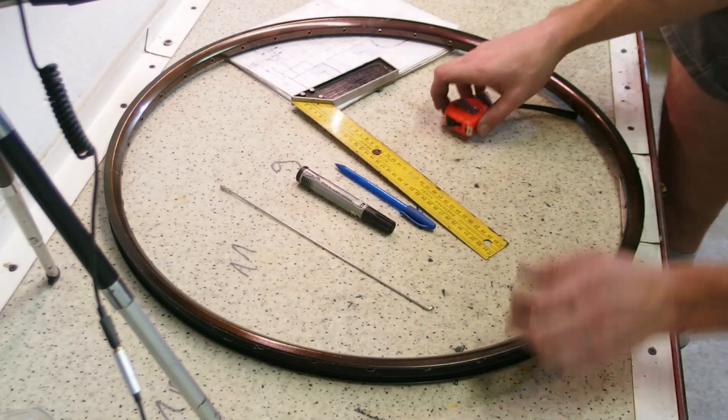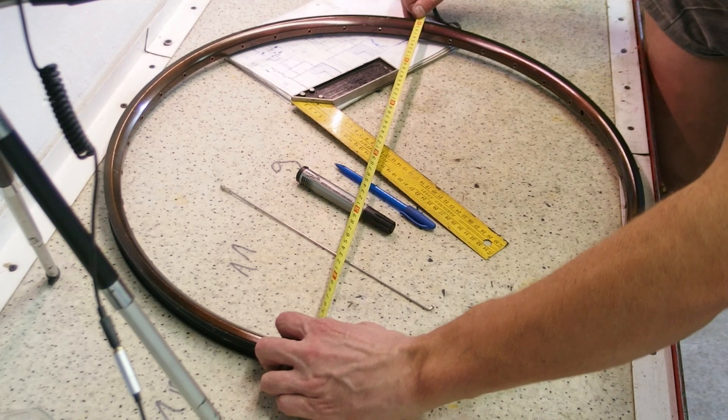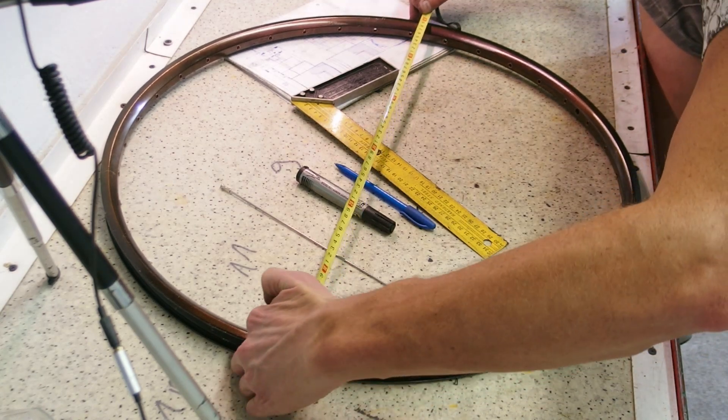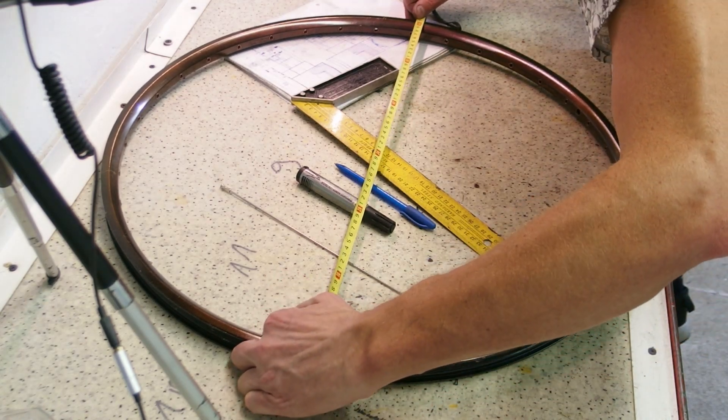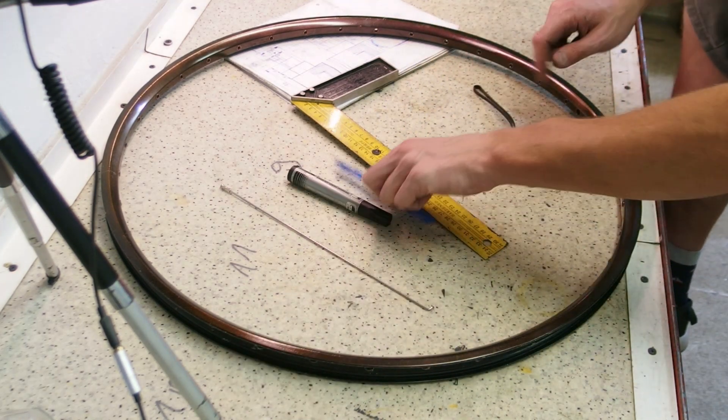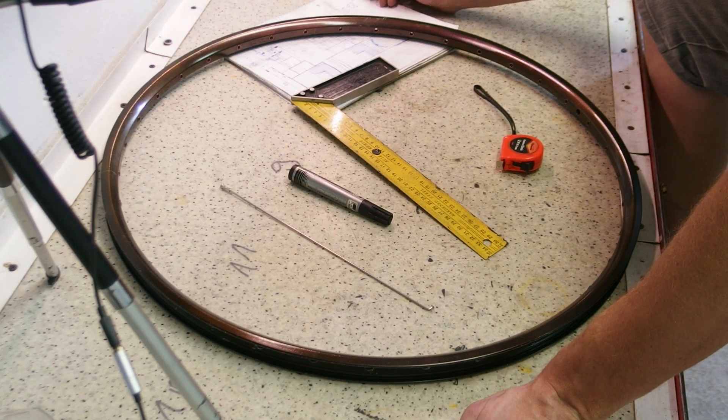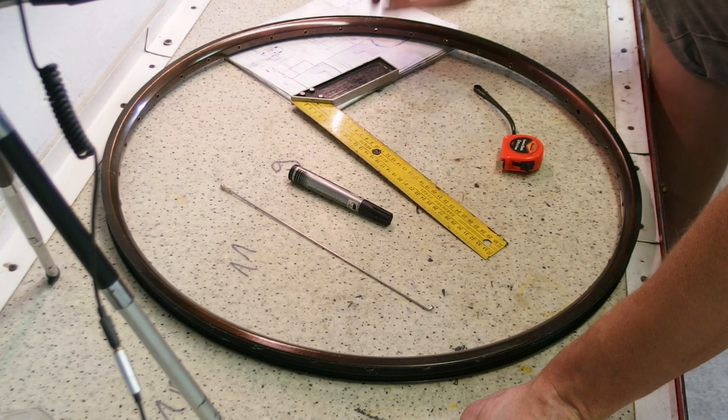Use that by measuring the diameter between the opposing spoke holes, which in this particular case is 592 millimeters, which we're going to note here: 592 millimeters.